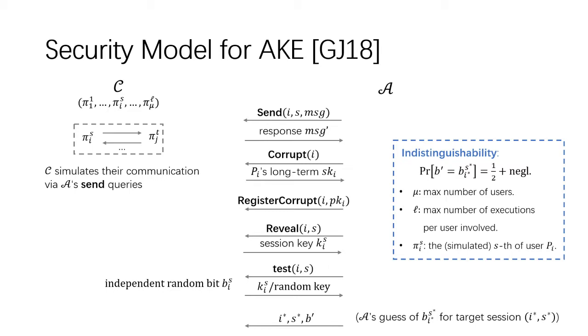The security of indistinguishability is described with the help of the test query. For query test(i,s), the challenger samples a random bit b_i^s and returns the session key K_i^s if b_i^s equals 1 and a random key otherwise. At last, A outputs b prime, the guess of b_i* s* for the target session pi_i* s* of its choice. If b prime equals b_i* s*, we say that A wins. The AKE scheme is IND-secure if A wins the experiment with only a half probability, roughly.